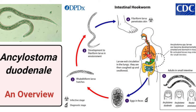The eggs hatch into large larvae, which penetrate the skin and enter the bloodstream. They migrate as large larvae and then as small larvae into the small intestine, where the larvae mature.